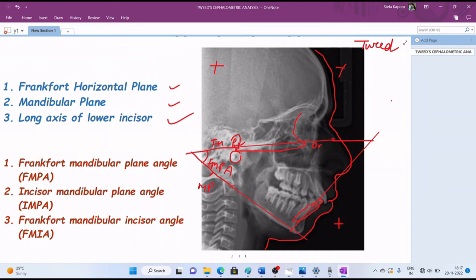The second angle is incisor mandibular plane angle, IMPA, which is formed by the intersection of the long axis of the lower incisor and the mandibular plane. The third angle is FMIA, which is formed by the intersection of Frankfurt horizontal plane and the long axis of the incisor.